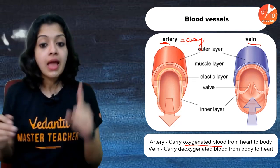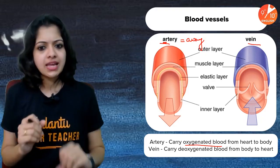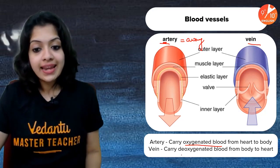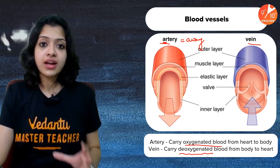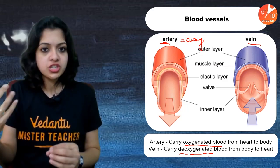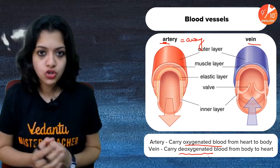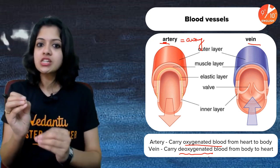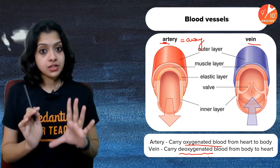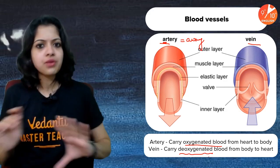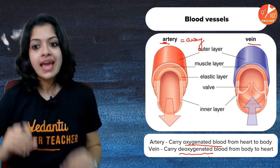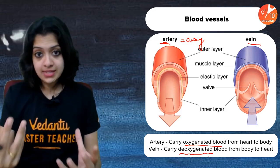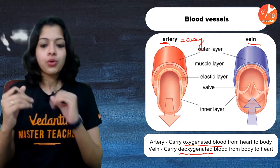Most arteries carry oxygenated blood from the heart to the rest of your body, and most veins carry deoxygenated blood back into the heart — but there is an exception to both which we will discuss shortly. The universal rule without exception is: every artery carries blood away from the heart and every vein carries blood towards the heart, regardless of whether it is oxygenated or deoxygenated.